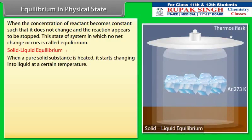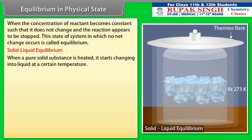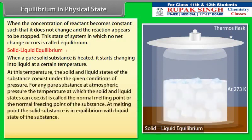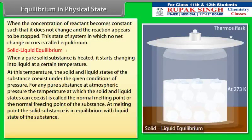Solid-Liquid Equilibrium: When a pure solid substance is heated, it starts changing into liquid at a certain temperature. At this temperature, the solid and liquid states of the substance coexist under the given conditions of pressure. For any pure substance at atmospheric pressure, the temperature at which the solid and liquid states can coexist is called the normal melting point or the normal freezing point of the substance.